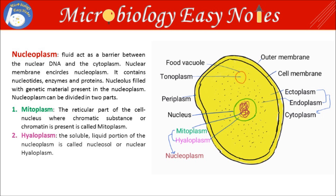Nucleoplasm can be divided into two parts. First is Mitoplasm — the reticular part of the cell nucleus where chromatic substance or chromatin is present. Next is Hyloplasm — the soluble liquid portion of the nucleoplasm, also called nucleosol or nuclear hyloplasm.